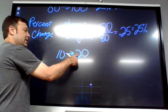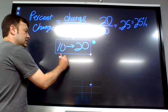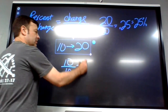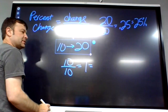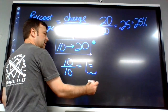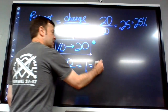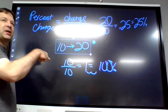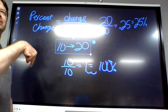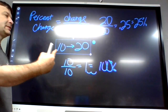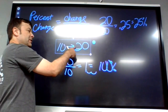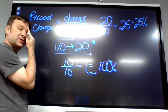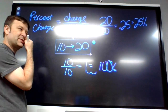What's the change from 10 to 20? That's 10. What's the original? 10. What's 10 divided by 10? That's 100 percent — a 100 percent increase. Because 100 percent of 10 is 10, so it's increasing by all of itself.